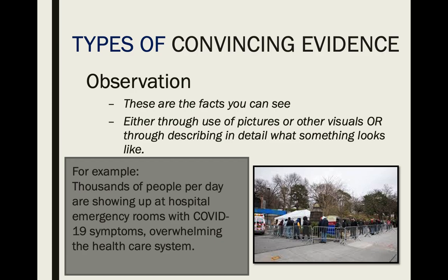The third type of evidence is observation — what you can see, either through pictures or other visuals describing in detail what something looks like. For example: thousands of people per day are showing up at hospital emergency rooms with COVID-19 symptoms, overwhelming the health care system, and you've probably seen pictures like this on news outlets showing a line of people waiting to get in. The reason this is not a statistic is I didn't give a number — saying 'thousands of' is an estimate, and estimates are not concrete numbers.